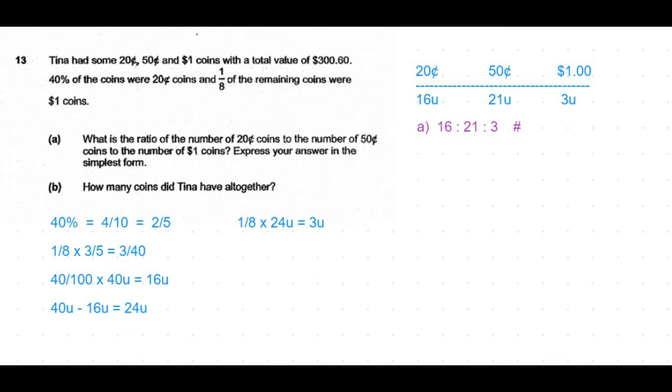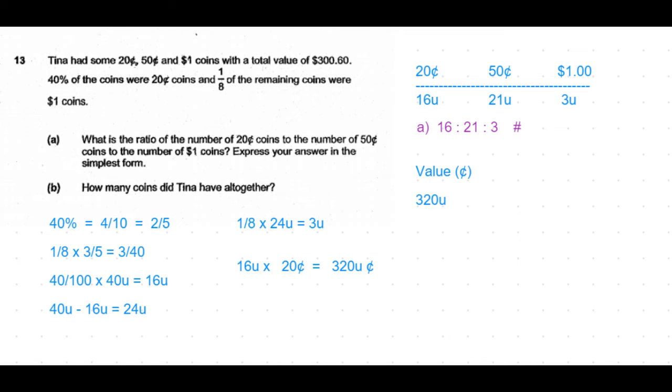Now coming to part B: How many coins did Tina have altogether? Let's look at the value of the coins. We have 16 units of 20 cent coins, which means 16 units times 20 cents equals 320 unit cents.